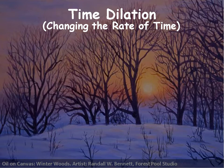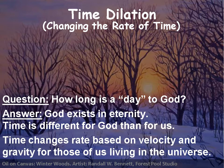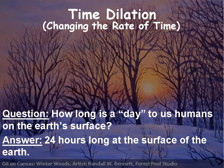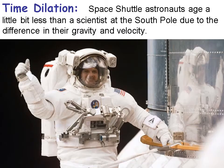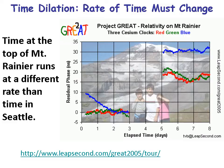How long is the day of God? God exists in eternity, and time is different for God than for us. Time changes rates based on velocity and gravity for those living in the universe — velocity and gravity are the basis for time dilation. A human day on Earth's surface is 24 hours. However, shuttle astronauts going around the Earth would have a slightly different time rate — basically 24 hours, but not exactly, because they're moving at a different velocity in a different gravitational environment.